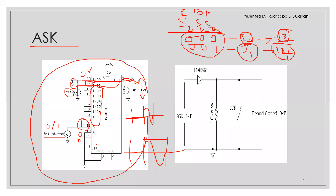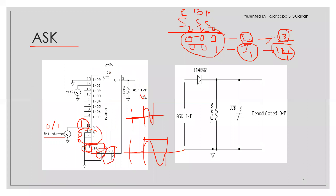Pin 6 must also be connected to ground because it is active low — if it is not connected, the IC will not work. Pin 13 is grounded for the zero case. Supply of up to 5V (or up to 15V as used in the lab) is provided to pin 16. This is how ASK is implemented using the CD4051.